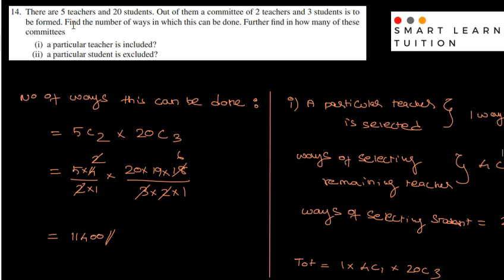So 5 teachers and 20 students. There are 2 teachers and 3 students. Find the number of ways in which this can be done. This straightforward problem is done using the combination technique.